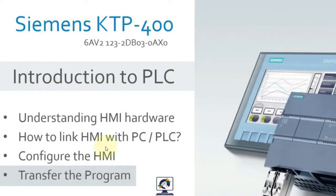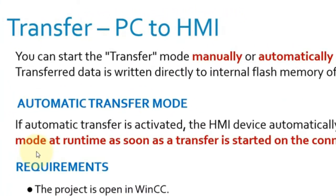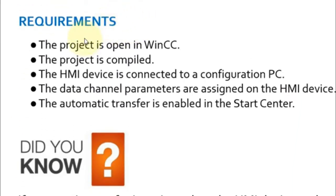Welcome back. The next step is to transfer the program, so let's look at the various steps involved. The first step is to make sure your HMI has the transfer mode set correctly — manual or automatic. As mentioned before, we have to make it automatic, and our HMI has an automatic mode.